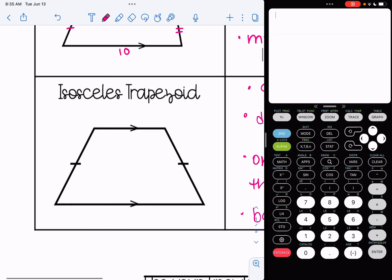That goes for both sets of base angles. So these two on the bottom would be congruent, and these two at the top would be congruent as well. So these sides are called the legs, and the two sides that are parallel are called the bases.